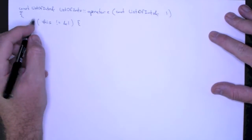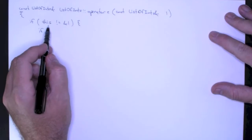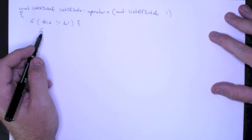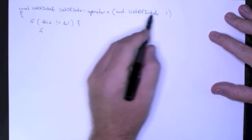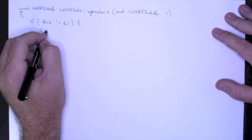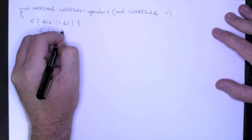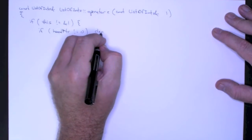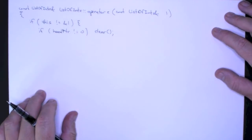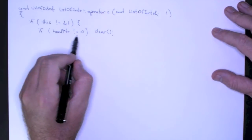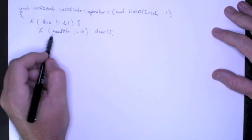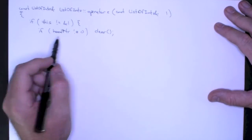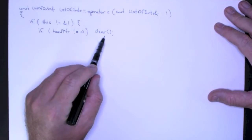Once I've cleared this hurdle, I need to check whether this object is empty — does it have a linked list? Because if it has a linked list, I need to clear it before I start my copy. So if head pointer of this object is not equal to null, then I want to call clear. We could implement an empty method that checks if head pointer equals null, but we haven't implemented that yet, so I'm just checking the head pointer directly.